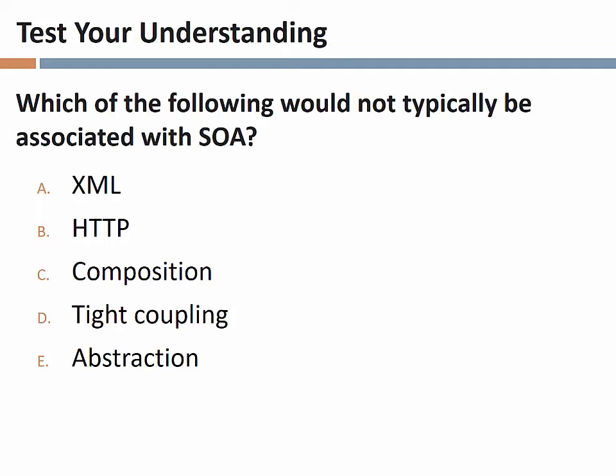Which of the following would not typically be associated with SOA? XML, HTTP, Composition, Tight Coupling, or Abstraction? The answer is Tight Coupling. We use XML and HTTP for transmitting information. Composition refers to using services to build bigger applications. Abstraction means we don't need to know how it works, just what it does. But we said it is loosely coupled — meaning we can reuse these pieces in many different contexts. It's not tightly coupled or glued into just one use in the overall system.